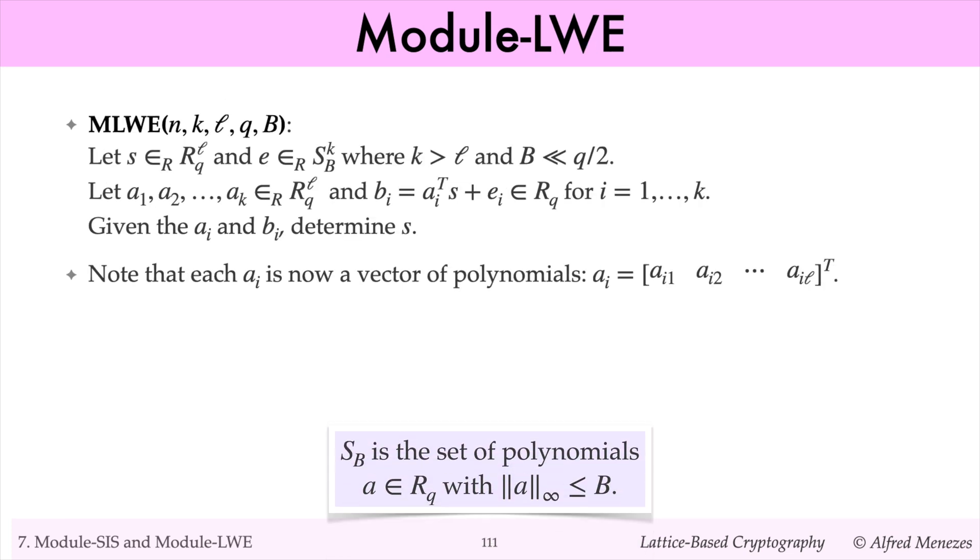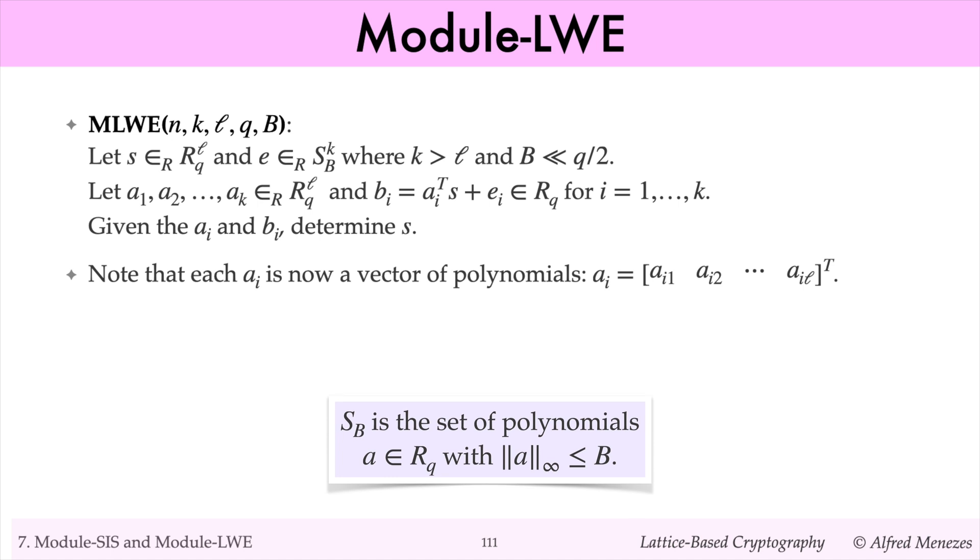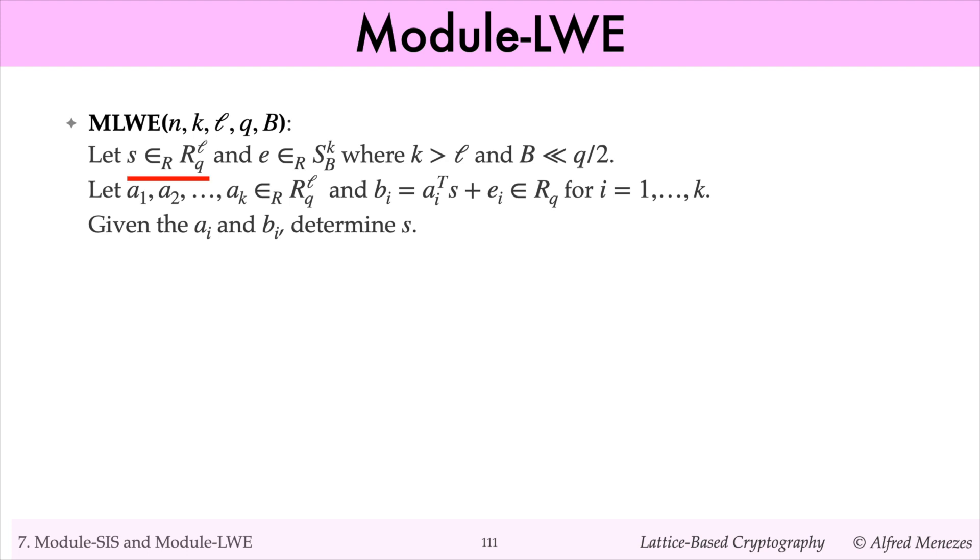Recall that SB denotes the polynomials whose coefficients in mod s's representation are between minus b and b. I'm calling these the small polynomials. SBK denotes vectors of k small polynomials. Module LWE is the following variant of LWE. Let S be a randomly selected vector of polynomials, and let E be a randomly selected vector of small polynomials. Let A1 up to AK be randomly selected vectors of polynomials,